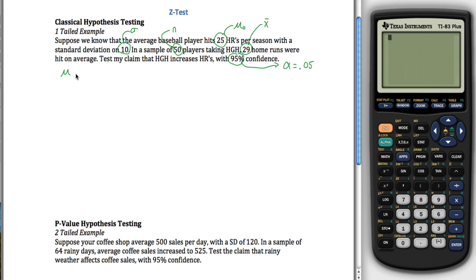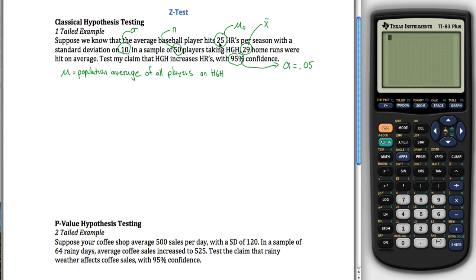One more symbol — mu. Mu is going to represent a population average, but not the same as mu naught. Mu naught was the population average of all baseball players; mu is the population average of all players if they're on HGH. The idea is we want to compare mu to 25. We know our sample value is greater than 25, but the question is whether the population value is greater than 25 — a sample could be 29 just out of luck. But if the population average of all players on HGH is higher than 25, then we know HGH is increasing home runs.